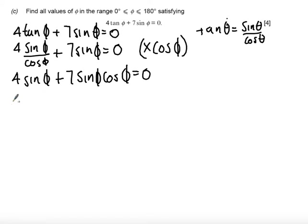It's important here that we factorise, not divide through. If I factorise by sinφ, I then get left with 4 + 7cosφ = 0. I can now solve both parts of this equation.